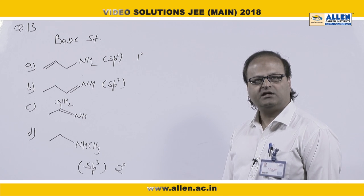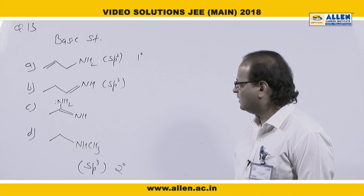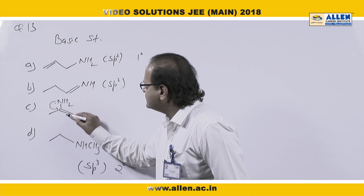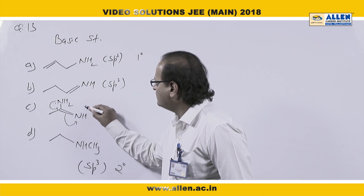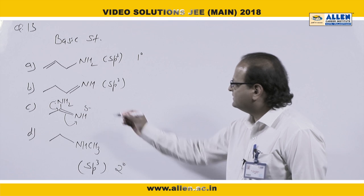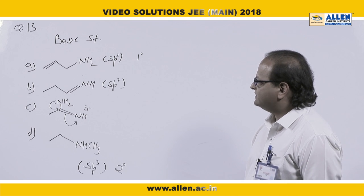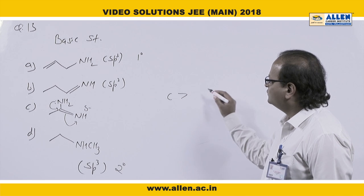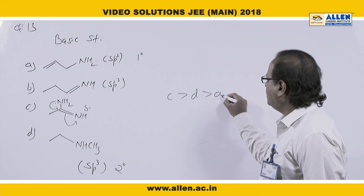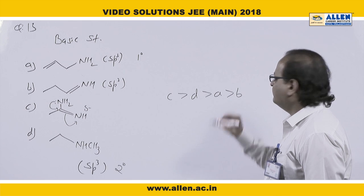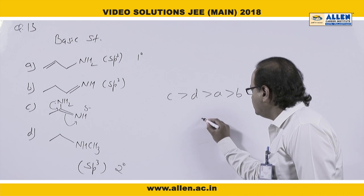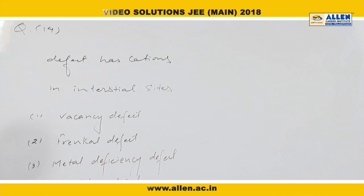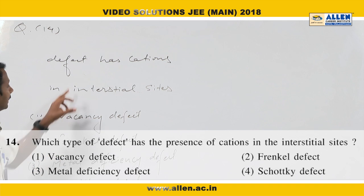In option B, the nitrogen is sp2 hybridized, making it more electronegative and less basic. In option C, the nitrogen's lone pair undergoes resonance, generating a partial negative charge on another nitrogen, making it the most basic overall. So the order of basic strength is C > D > A > B, which corresponds to option 2 — the correct answer.